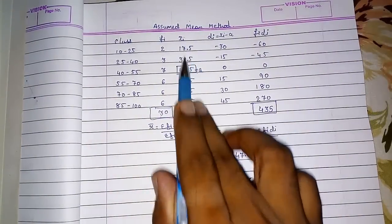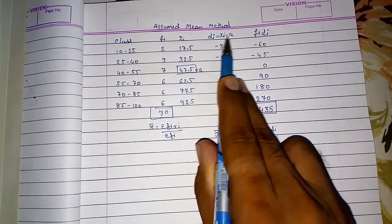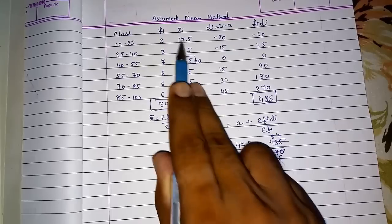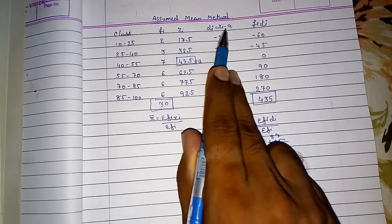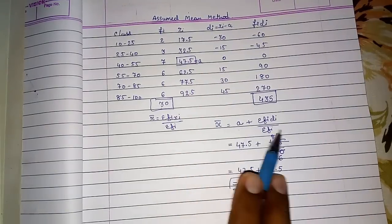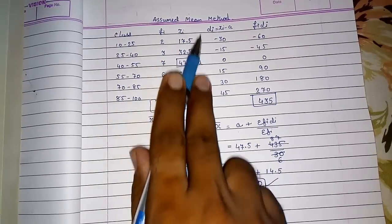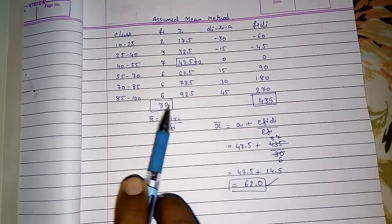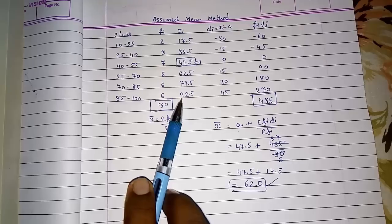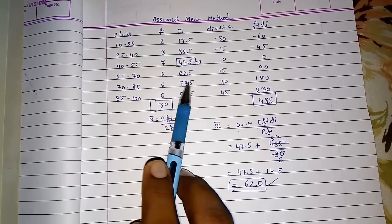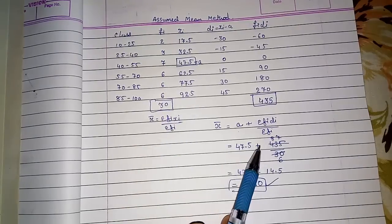Again, what we had done? We had reduced these numbers by subtracting a, and then we had multiplied, and then I had added this subtracted a in my formula, so I got the same mean. If you want to do directly also, you can do. You will get the same answer, but it will take so much time, and there are chances you make mistakes in any of the single numbers and your whole answer will become wrong.